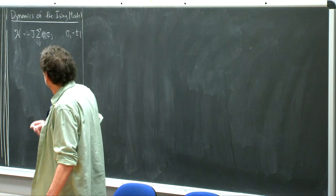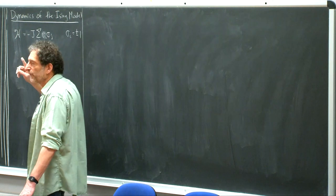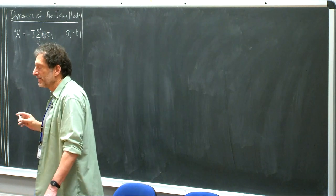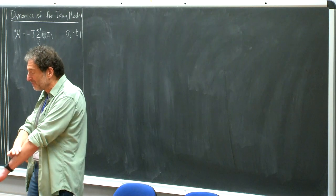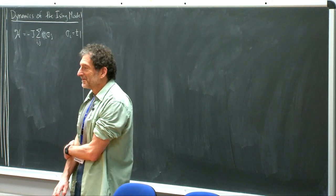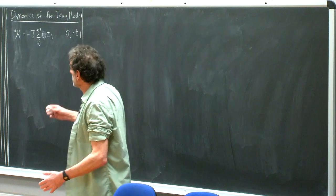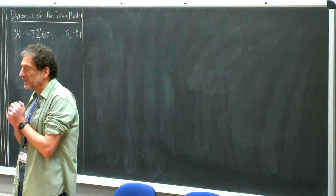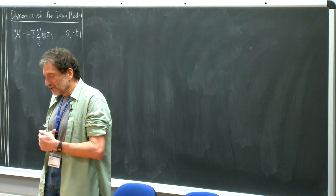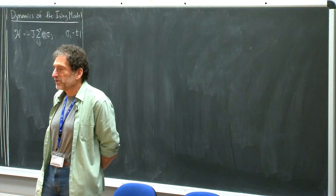A student asks: what is the meaning of the minus sign in front of the Ising Hamiltonian? The answer: the minus sign gives ferromagnetic interaction. If σᵢ = σⱼ, the product is +1, contributing negative (low) energy, which is favored at low temperature. A plus sign would favor anti-aligned spins — that would be the antiferromagnetic Ising model.